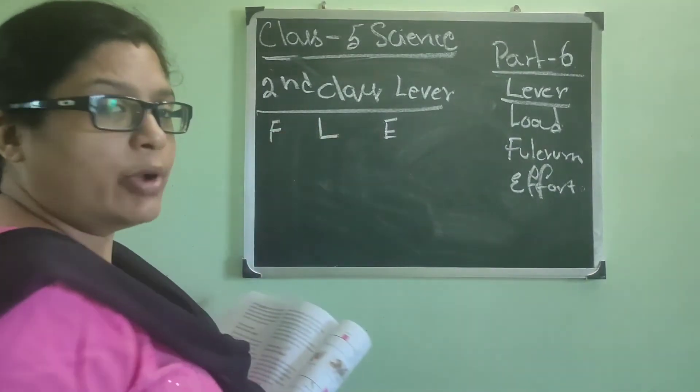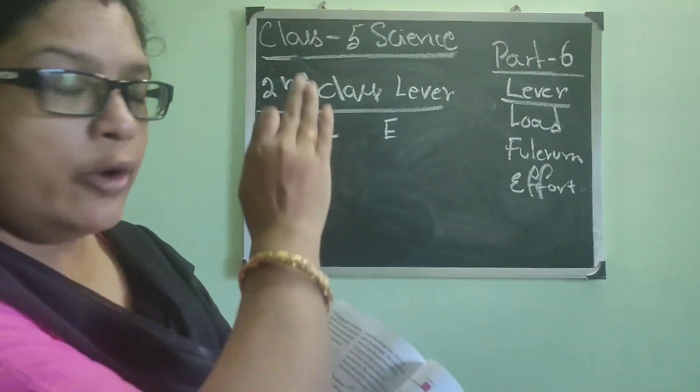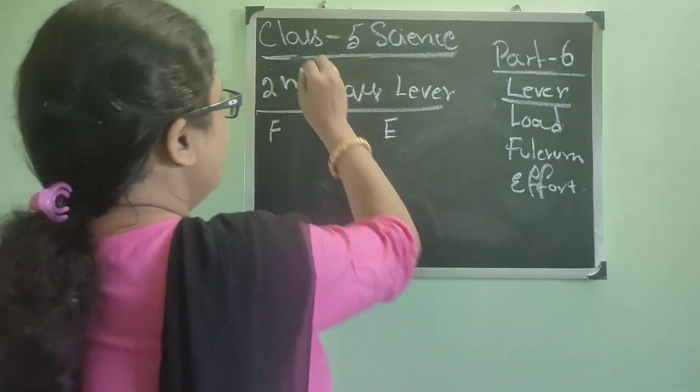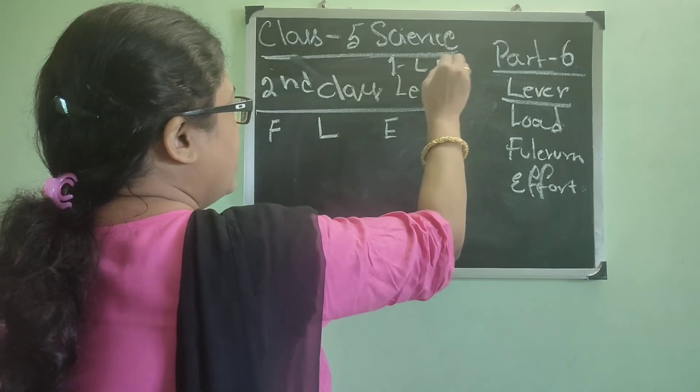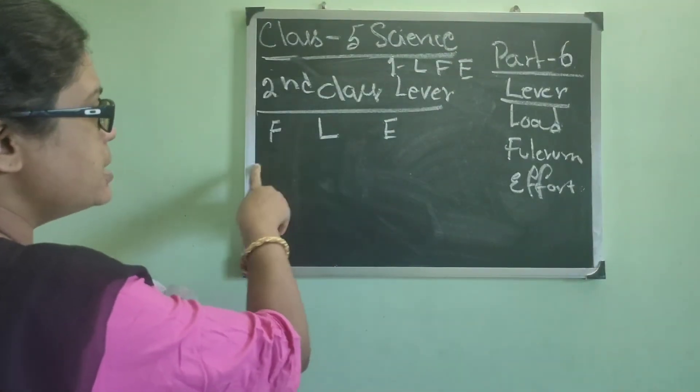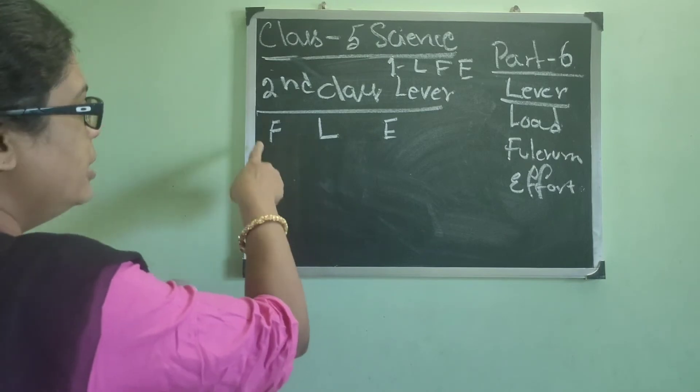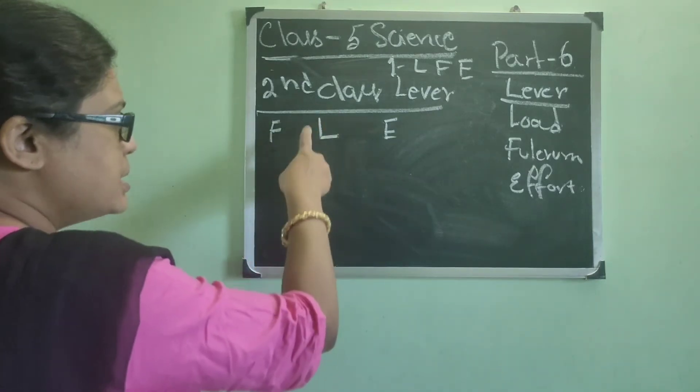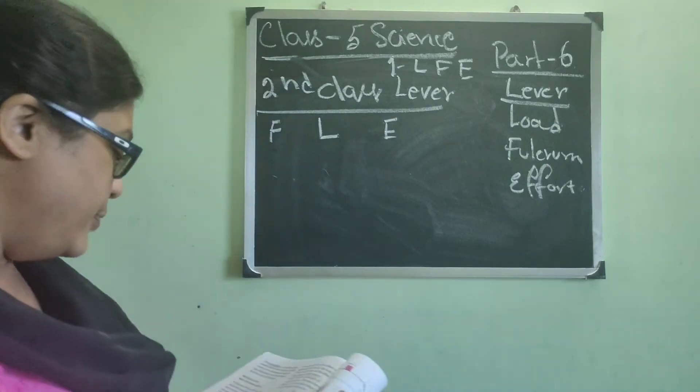So in first class lever, what we have seen? Load, fulcrum, effort. In first class lever, load, fulcrum, and effort. Here see, just these two places are being changed, isn't it? The load is in the center and fulcrum in case of second class lever.